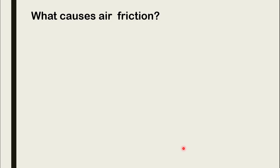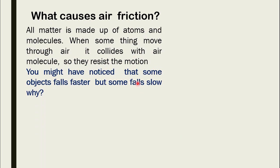What causes air friction? Air is a mixture of different gases, and all matter consists of particles — named atoms, molecules, or simply particles. Whenever an object moves through the air, these particles collide with that object. The particles present in the air collide with the moving object and resist its motion — they come in its path and oppose it from passing through. That is why this is called air friction.